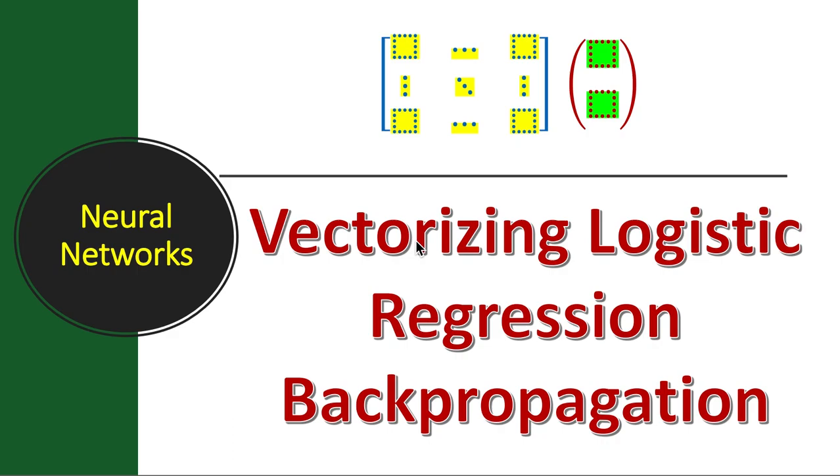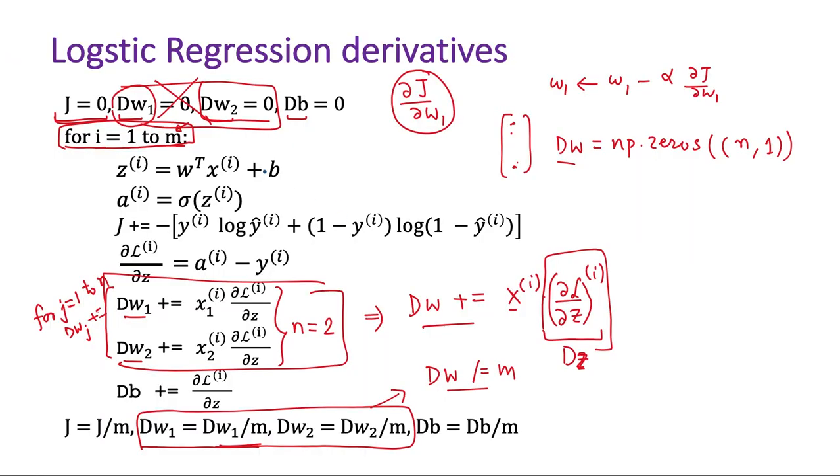In our earlier lessons, we had seen how to do the computation of logistic regression, the forward propagation step, without using any loop. And then in our earlier lesson, we had also seen how to remove the loops in the gradient computation of logistic regression. And we had seen that there are two loops, one outer loop which loops over the M training examples, and one inner loop which loops over each of the features. So we had got rid of this inner loop, but this outer loop was still there.